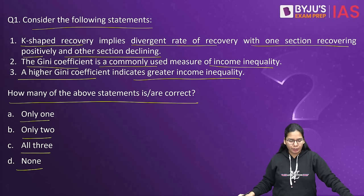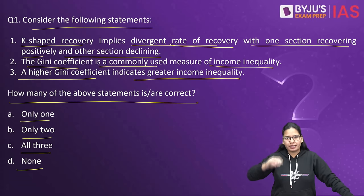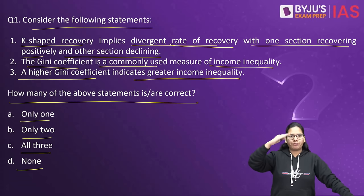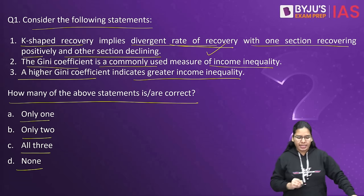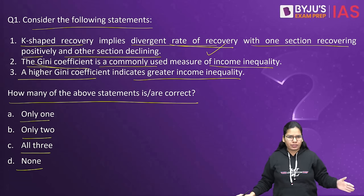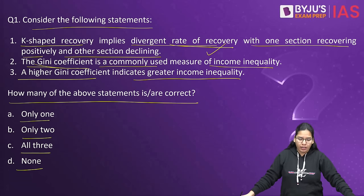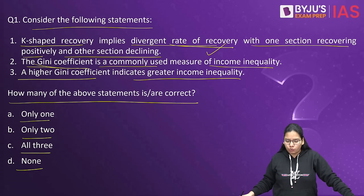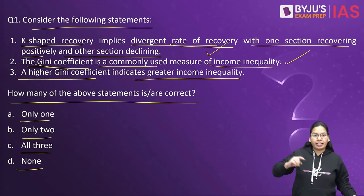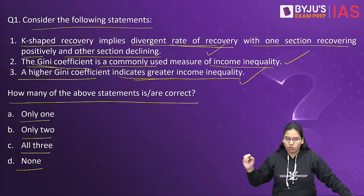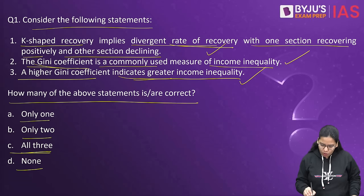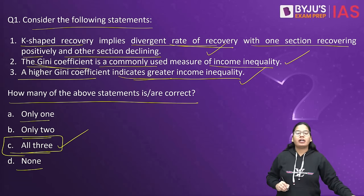Let's see the first statement. K-shaped recovery implies divergent rate of recovery — one section is recovering positively and one section is declining. So the first statement is absolutely right. Second statement: the Gini coefficient is a commonly used measure of income inequality. Third statement: a higher Gini coefficient indicates greater income inequality — also right. So here all three statements are right, and C is the correct option.